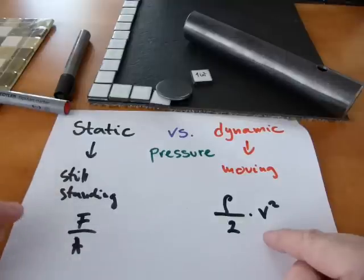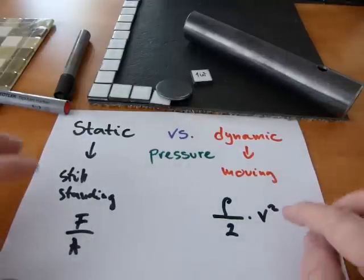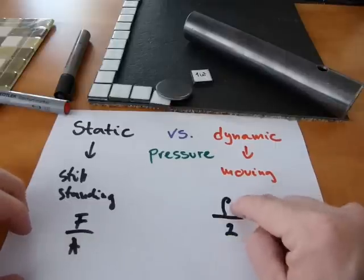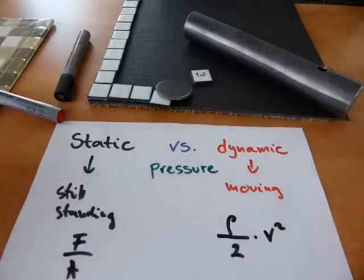This formula doesn't look anything like this formula. It's got a square of speed in it, it's got density in it, versus force and area. So, two completely different concepts.